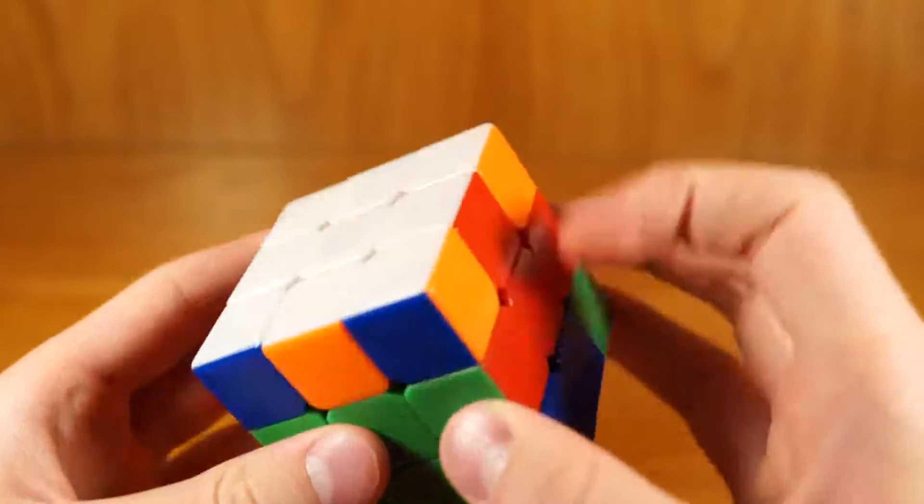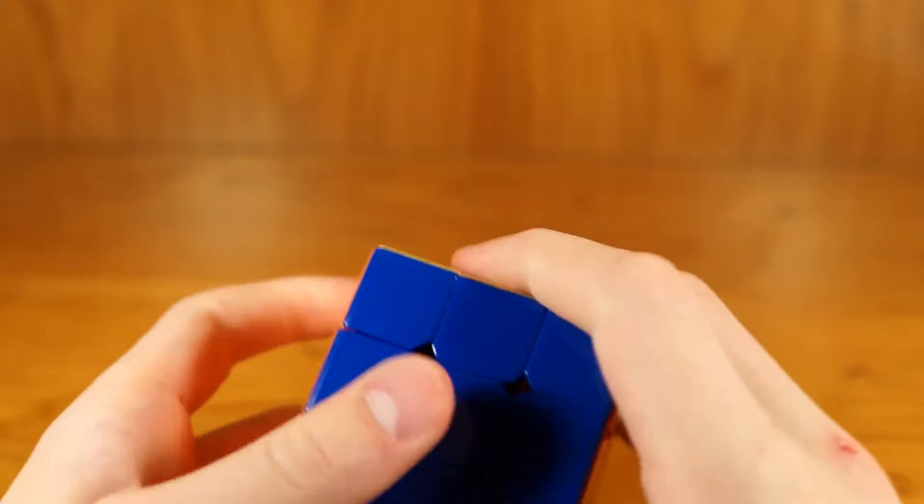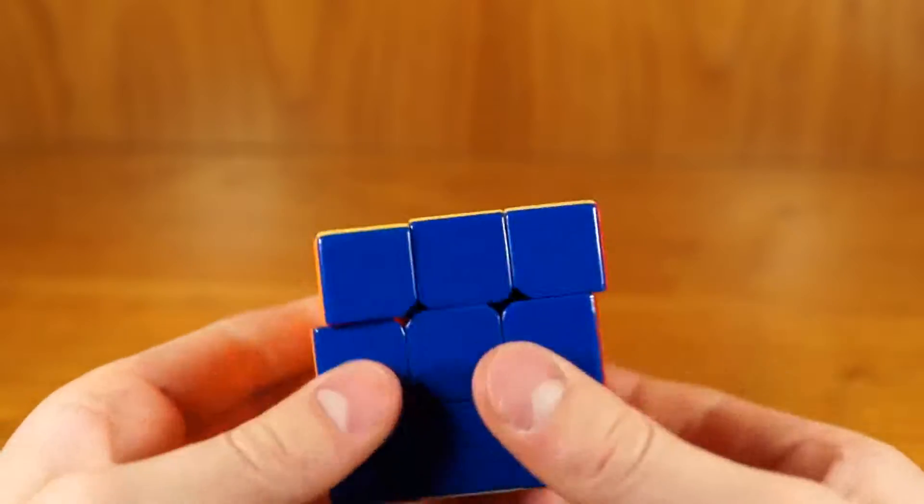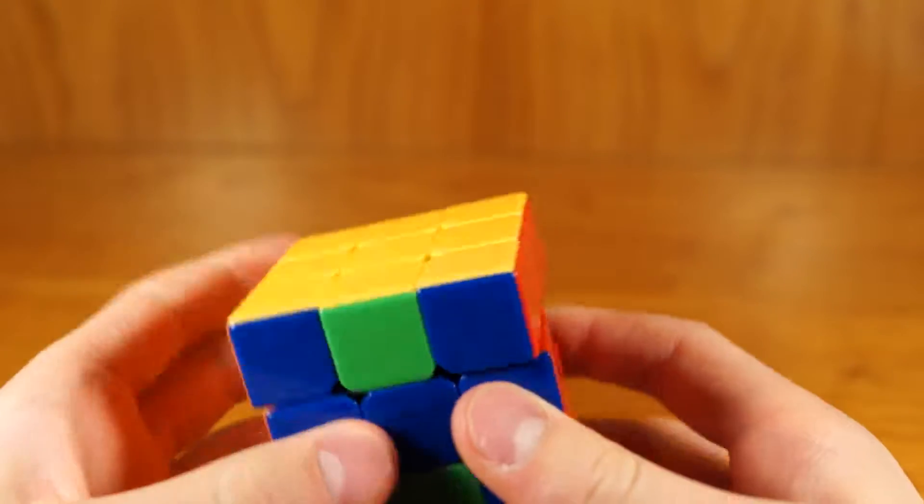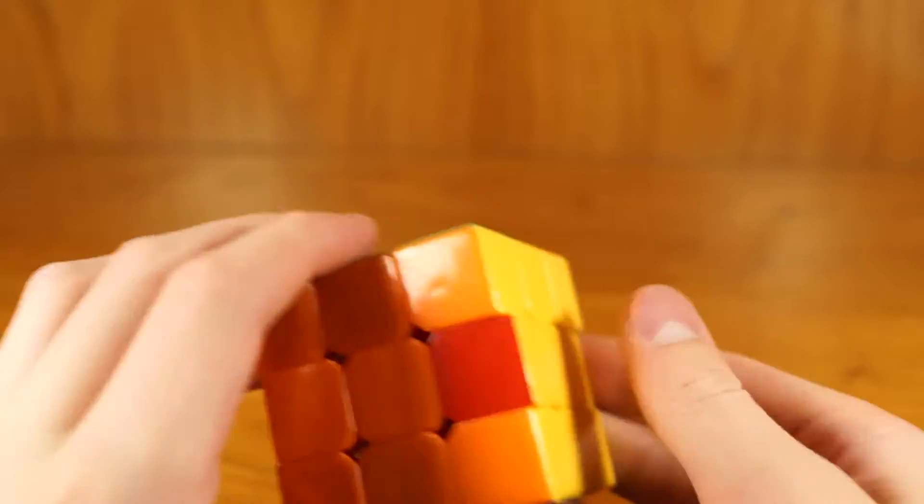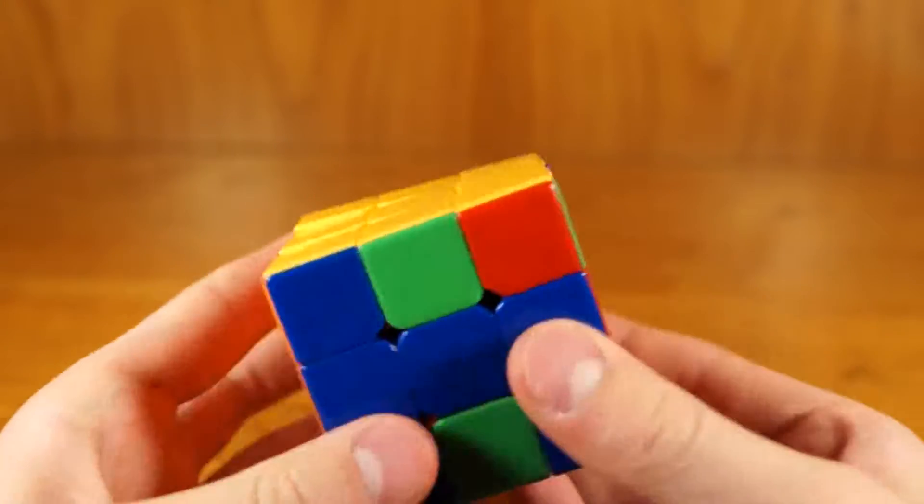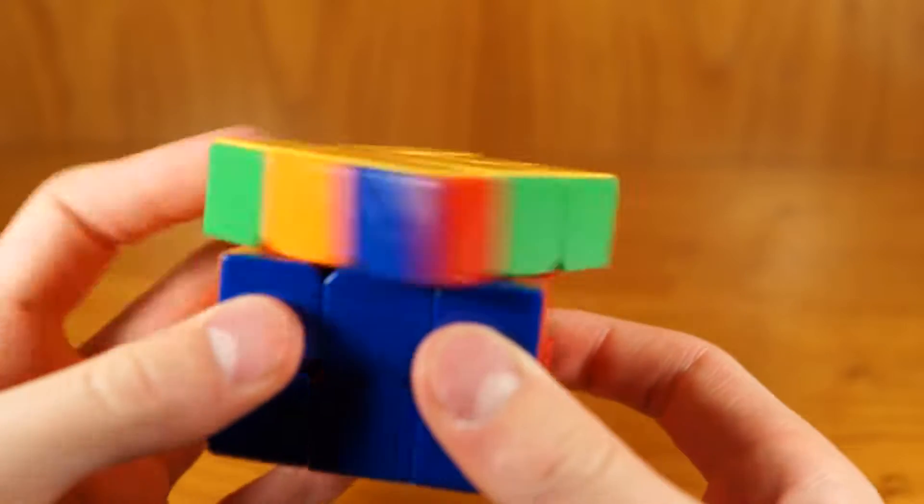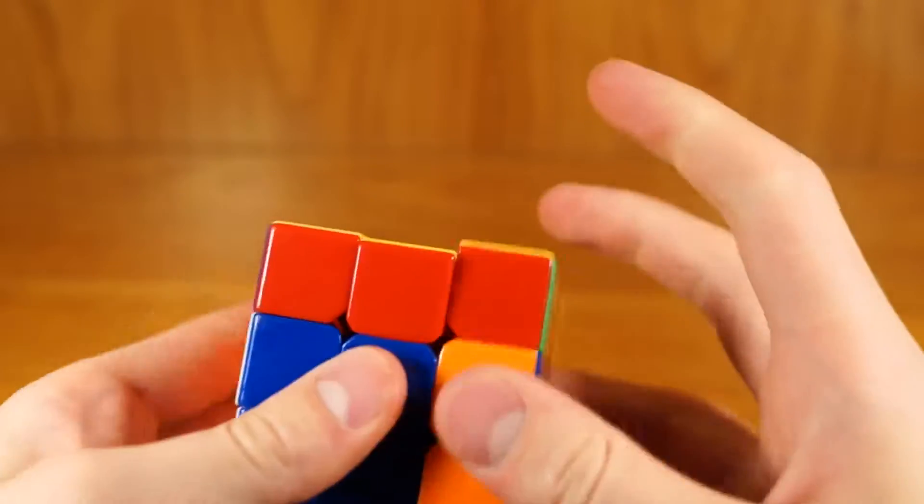And then now what you need to do is OLL, then you do PLL on both sides. And what you may get is something that looks like this, where it's an unsolvable case. And for that you just do M2, U2, M2, U2. And then now you have a solvable case.